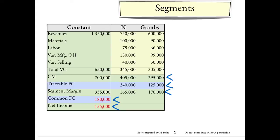In this brief look at segment reporting, we start off with a combined entity called Constant, which has two divisions, the N division and the Granby division.